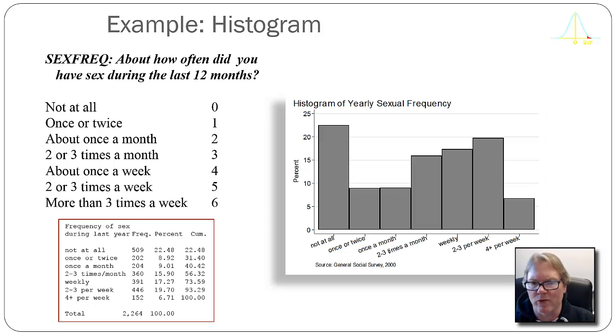But those bars overlap because the upper true limit of the not at all category is the same value as the lower true limit of the once or twice category, and that's the hallmark of continuous variables when we collapse them into a distribution. And therefore we push the bars together so that they touch, and then this in distinction or compared to a bar chart would be called a histogram or a frequency histogram.